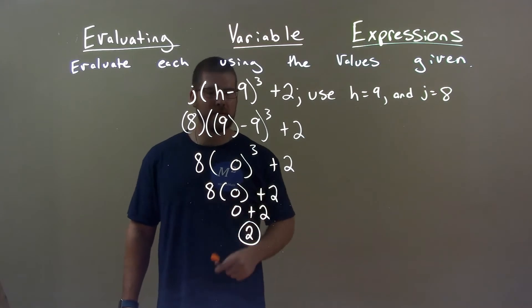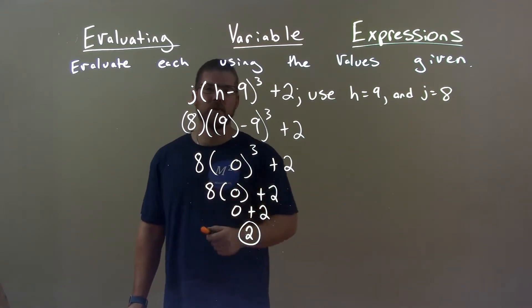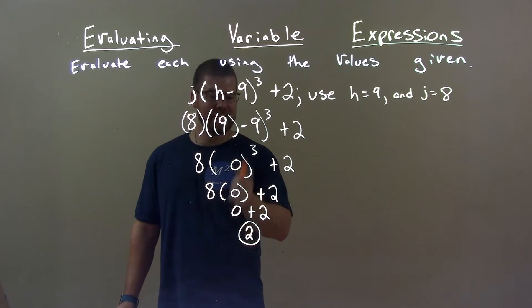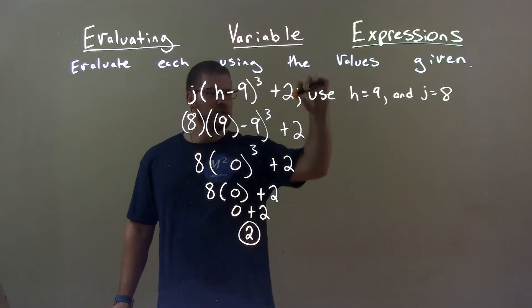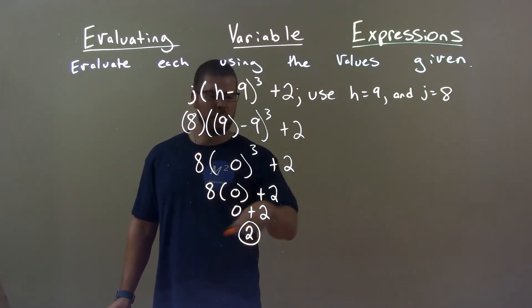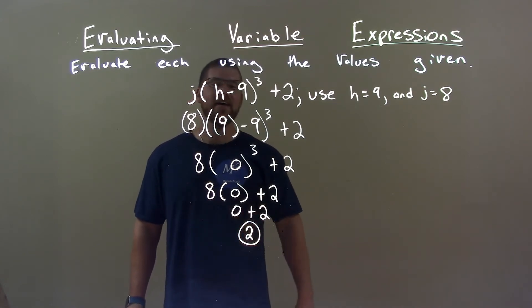Order of operations. 9 minus 9 first is 0. Then 0 to the third power is 0. 8 times 0 is 0. There's a 0 gravy train right there. 2 comes down the whole way. 0 plus 2 is 2. So again, our final answer is 2.